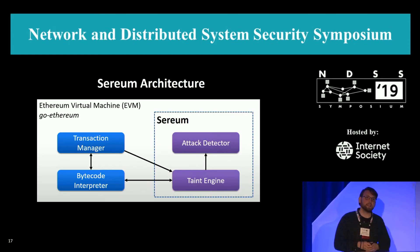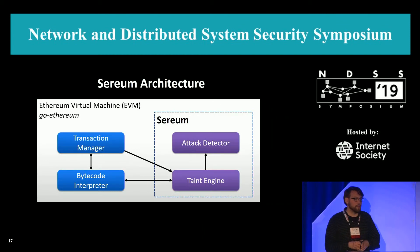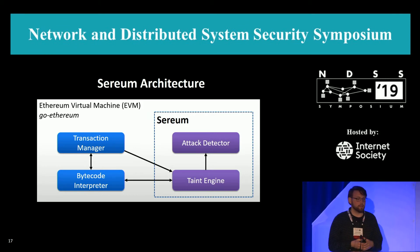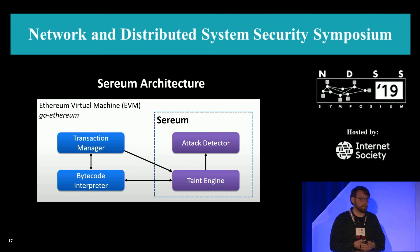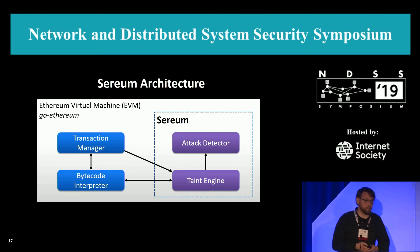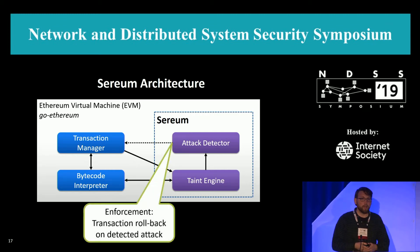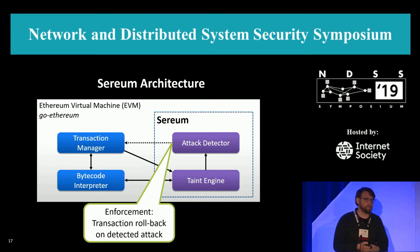Here is the rough architecture of Serium. We extended the GoEthereum client and added a taint engine, which is closely integrated with the bytecode interpreter. The taint engine will notify the attack detector when something suspicious happens, and the attack detector keeps track of all the write logs and critical variables. Optionally, we can run an enforcement mode, which means as soon as we detect an attack, we will roll back the whole transaction and basically revert the whole attack.